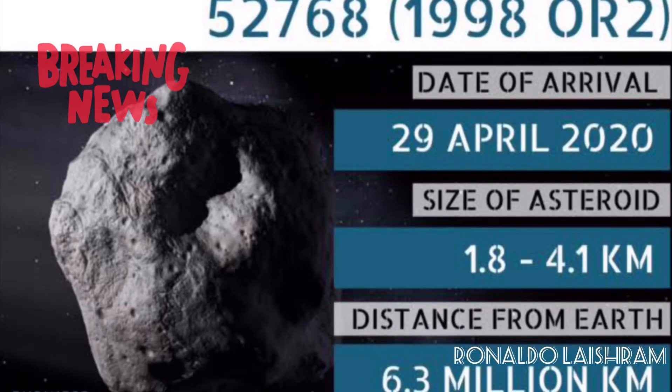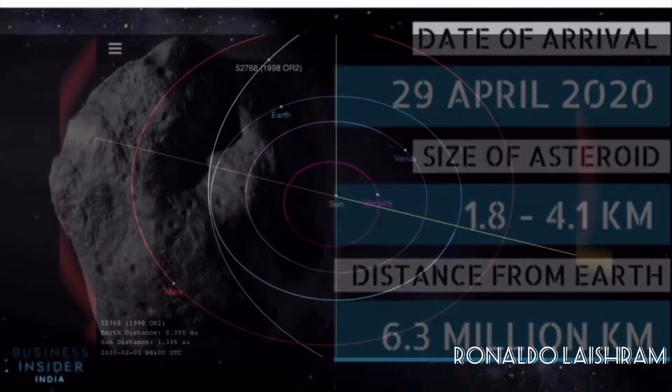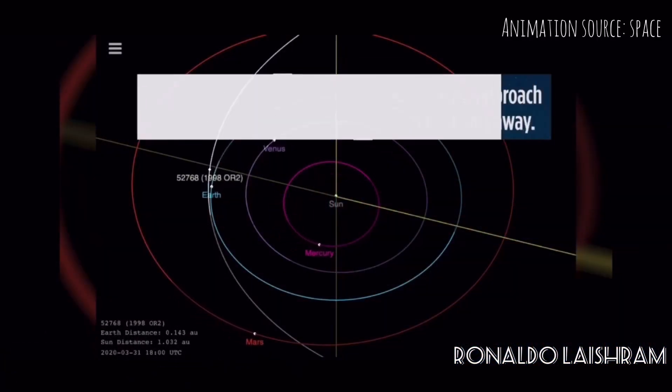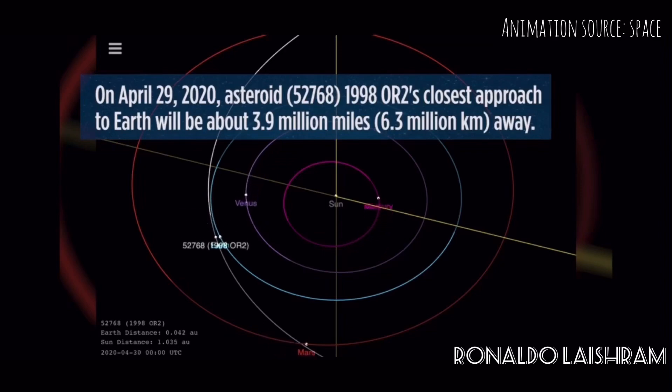A large and potentially hazardous asteroid 52768, also known as 1998 OR2, will make a close approach to Earth on April 29.